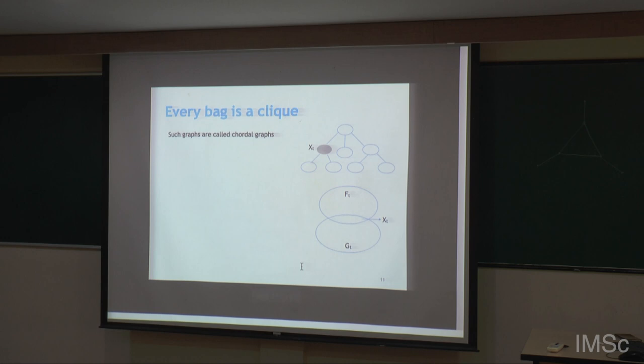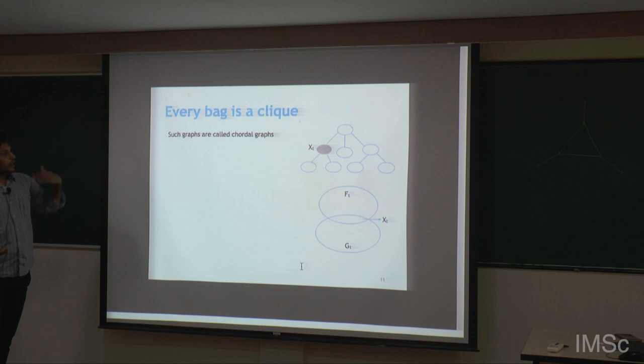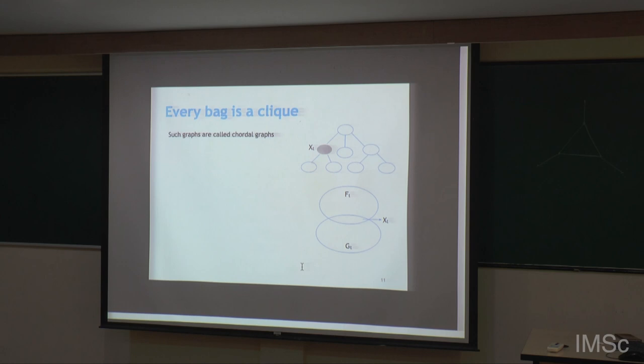Another definition of a chordal graph is that it does not have an induced cycle of length strictly more than 3. If we have a tree decomposition like this — that is, for chordal graphs we have such a tree decomposition — then we can solve the two problems we have seen before in polynomial time.